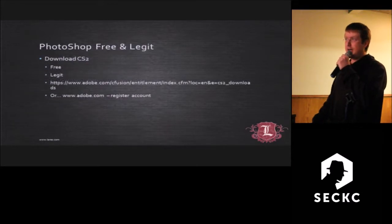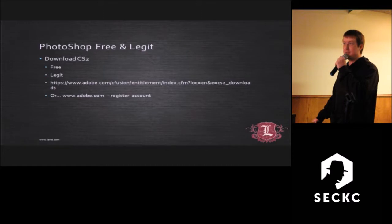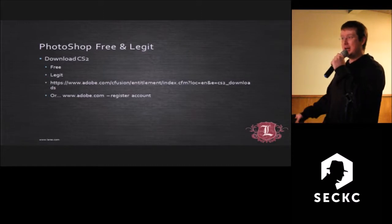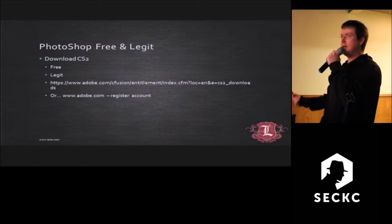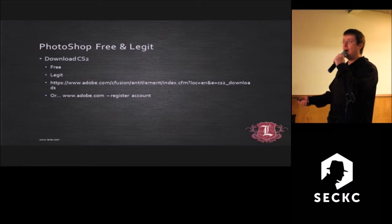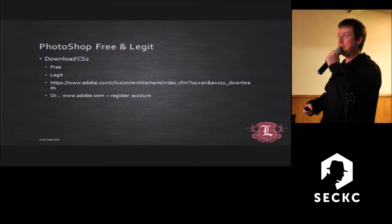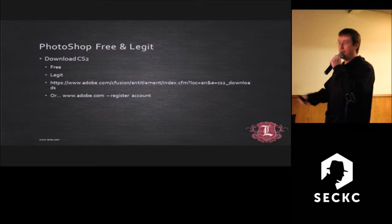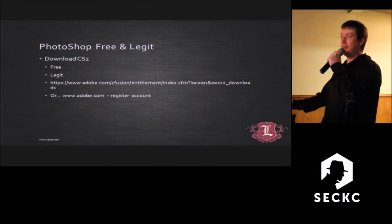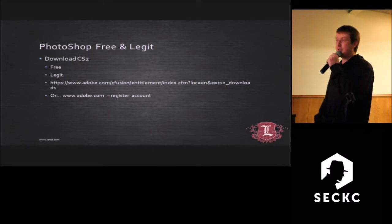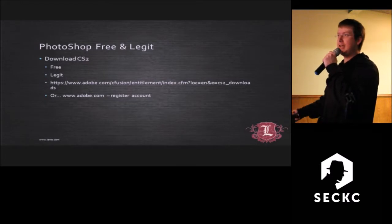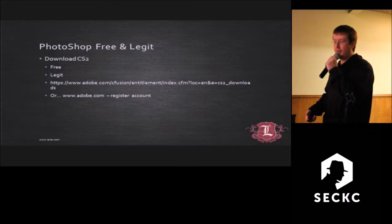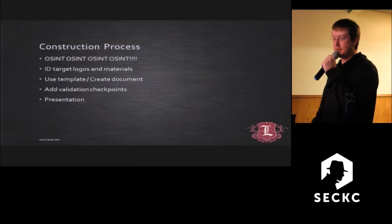Photoshop you can get for free and legitimately. Someone at Adobe screwed up royally — about 20 people lost their jobs a few years ago when Adobe published Photoshop Creative Suite 2 open to the web with all the keys and free downloads. They had to just let it be and let everyone have it for free. All you have to do is register with an account on Adobe.com and you get the full Creative Suite 2 — Photoshop, Illustrator, everything — for free. It's great to use for document forgery.